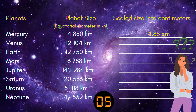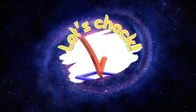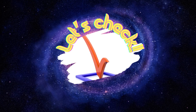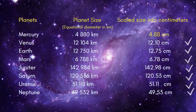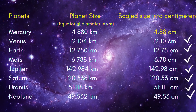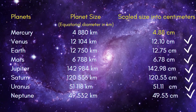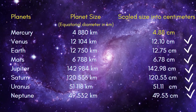You are like mathematicians for today's science video! If you are done, let's check — get your checking pen now. Let's see if you got the correct answer. These are the answers for the scale size in centimeters from Mercury to Neptune. Check your own work. Congratulations if you got the passing score or the correct scores in this learning task!